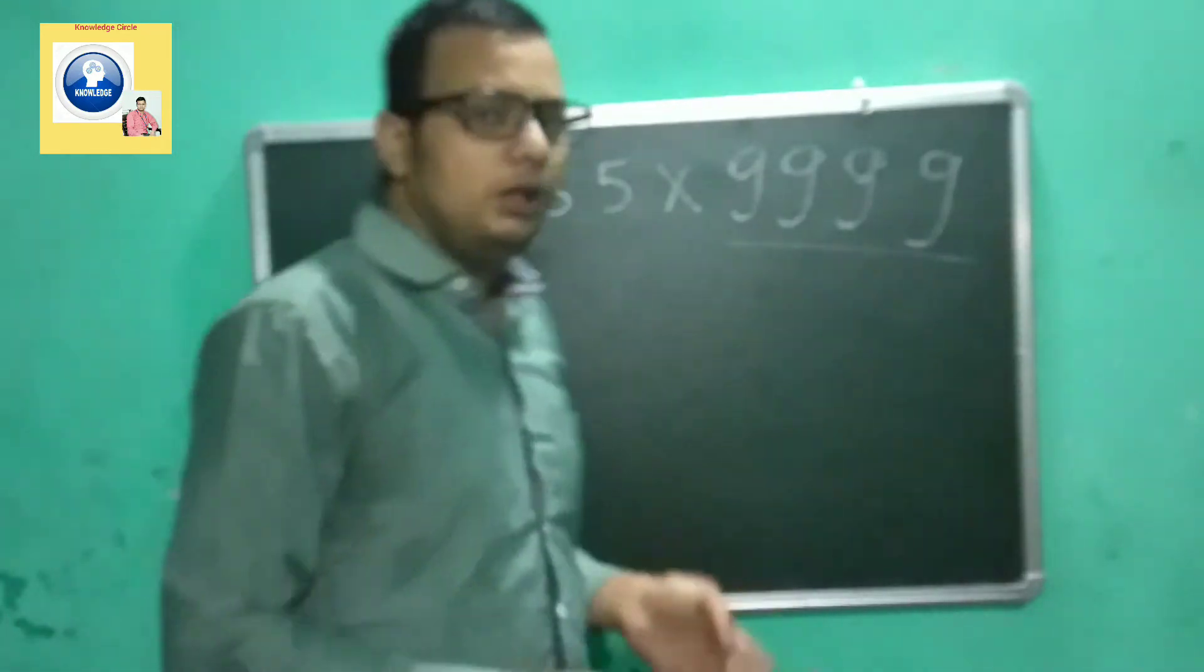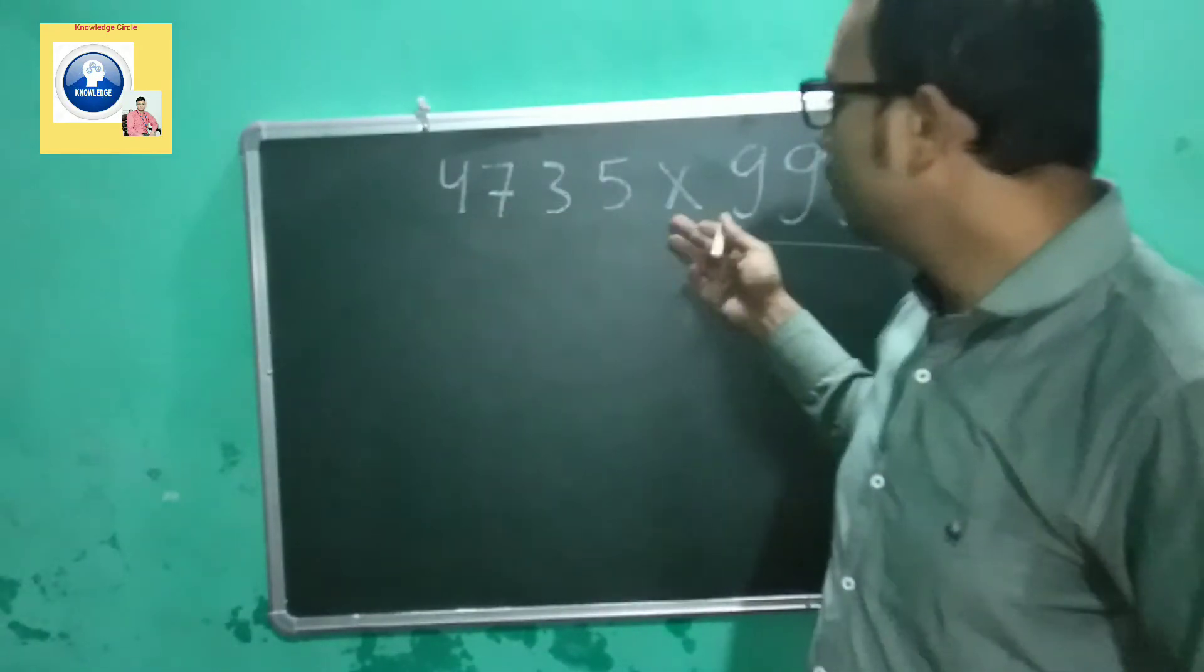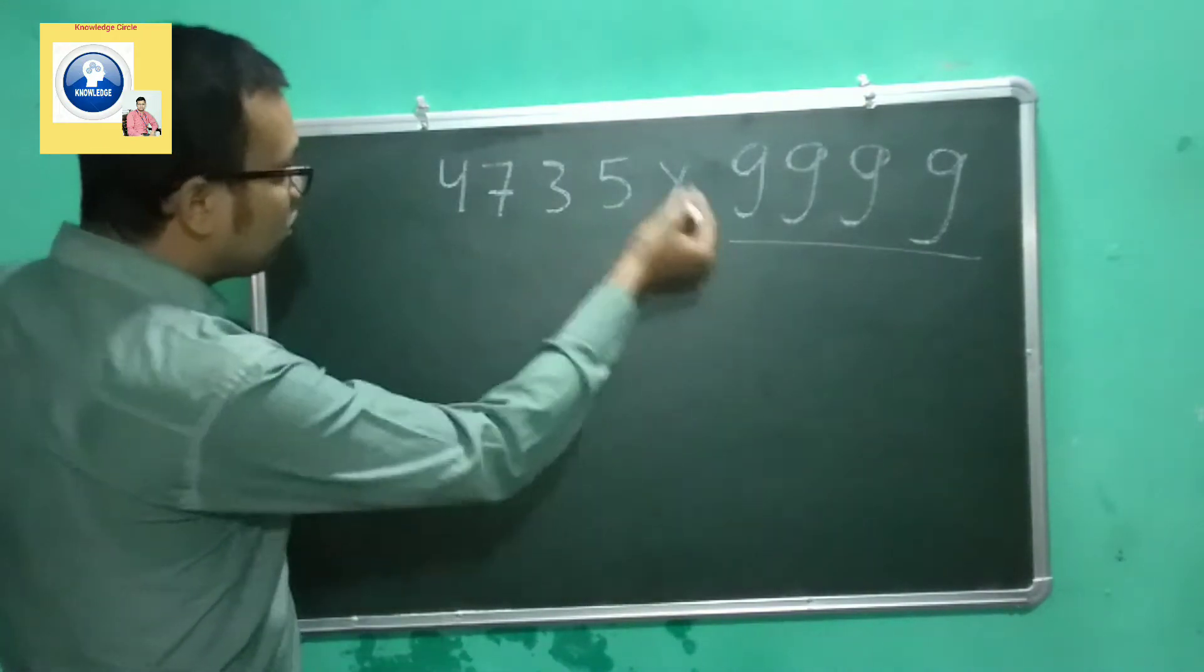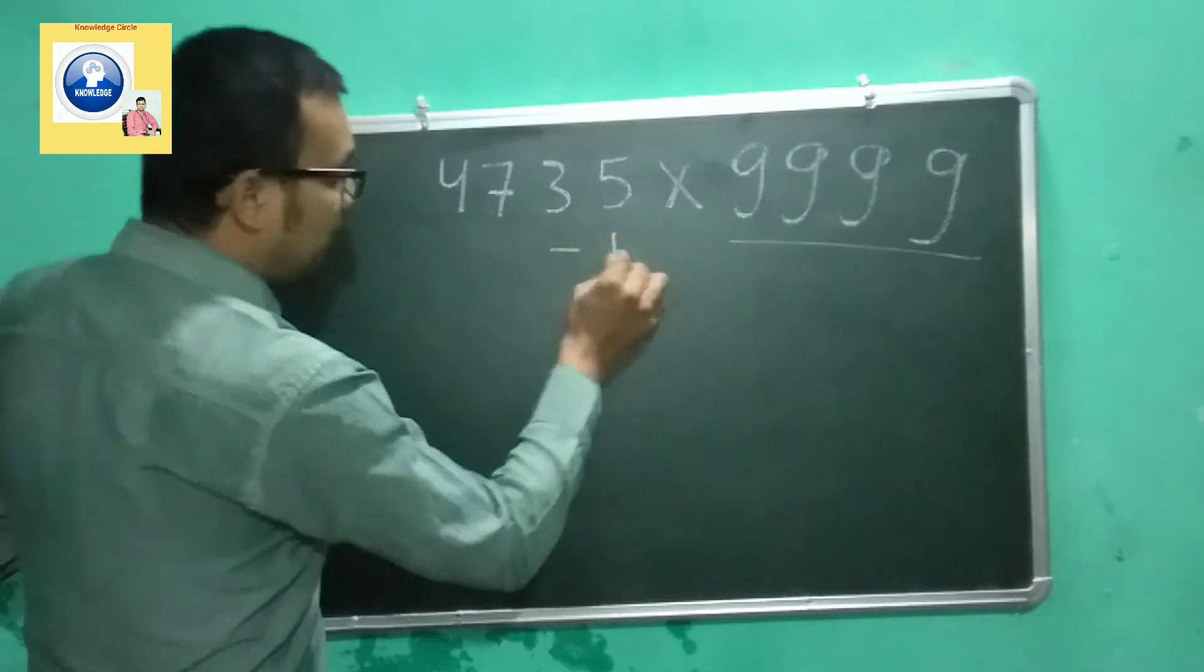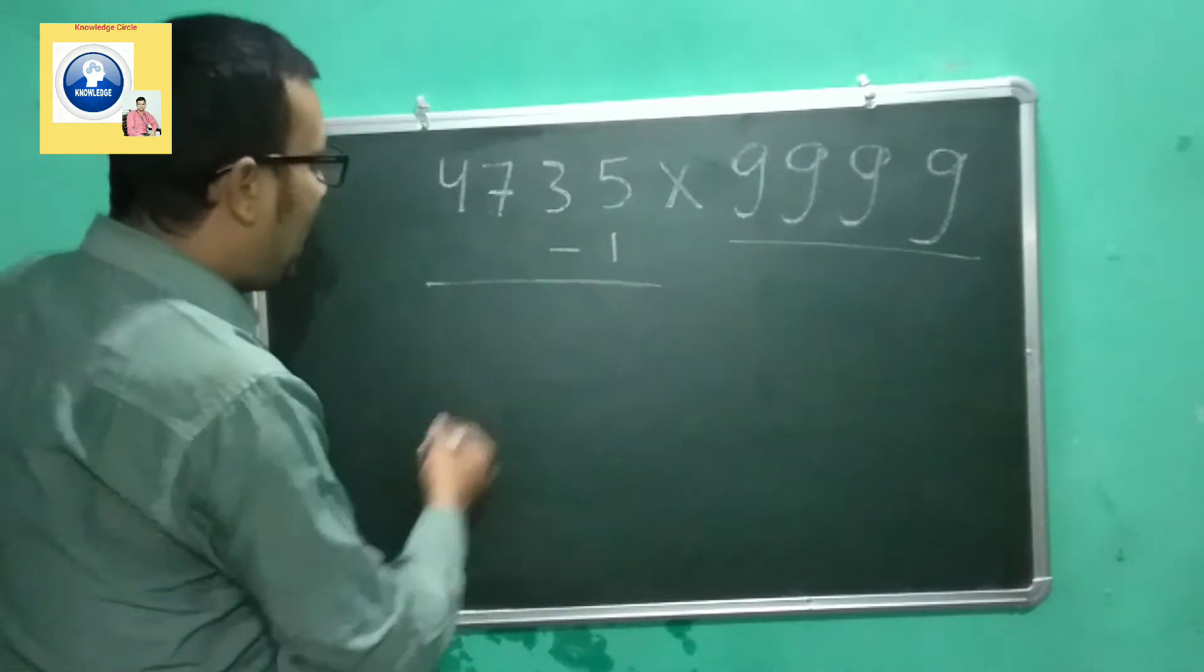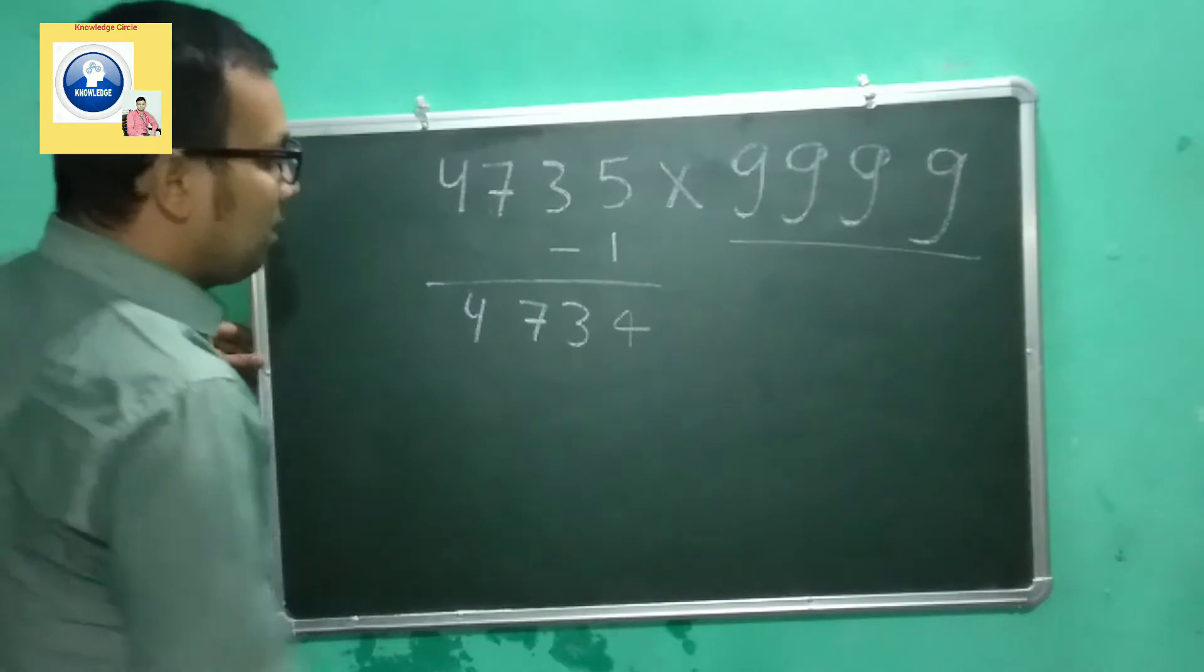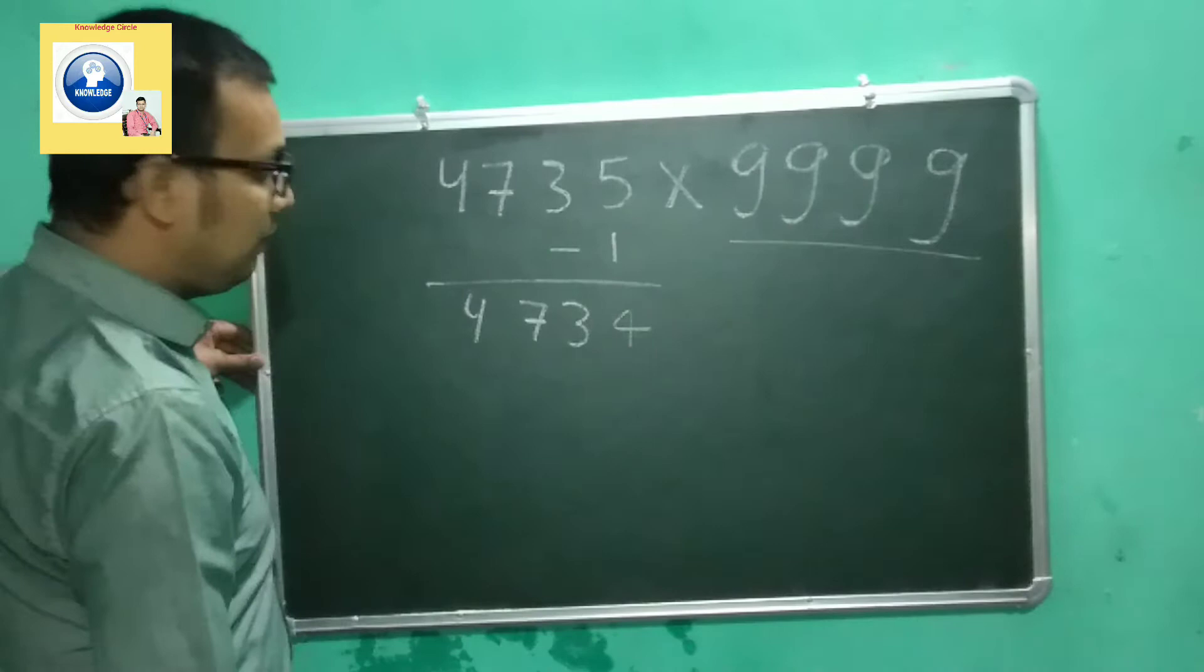I will tell you a shortcut method where within a few seconds you will be able to do the multiplication. Let's see how we can do that. There is a shortcut trick. First of all, what we're going to do is subtract 1 from this number, so it will be 4374.